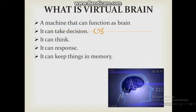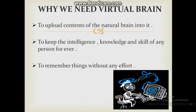The virtual brain can keep things in memory, can respond, can give the answer to any question, and can think about what another person is talking about. It can take decisions. While a human can take the wrong decision, the virtual brain cannot — it will always take the right decision.